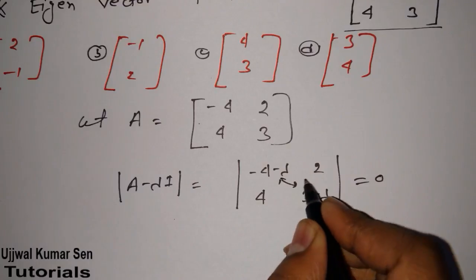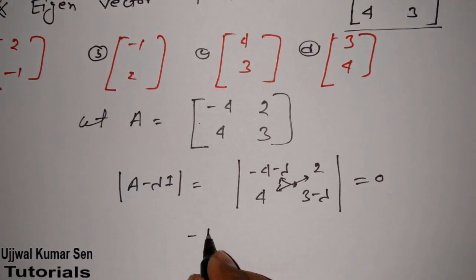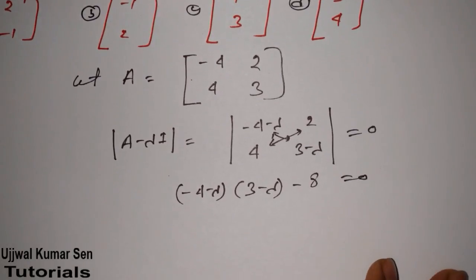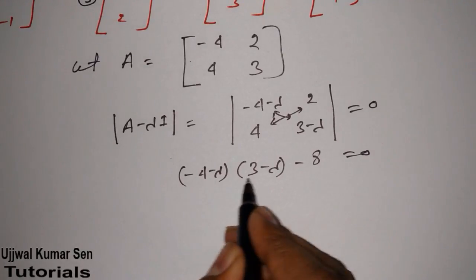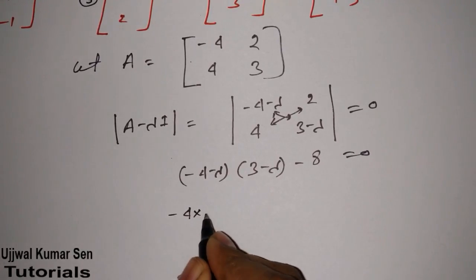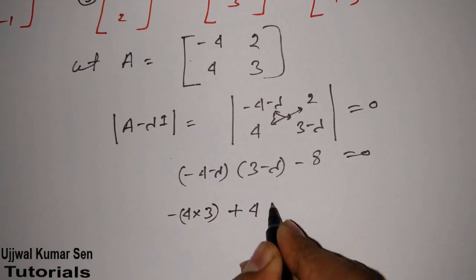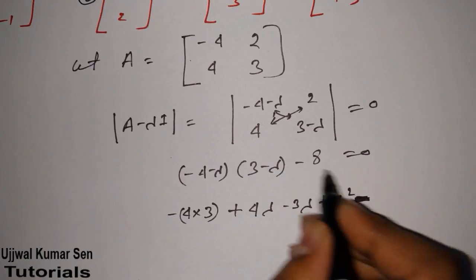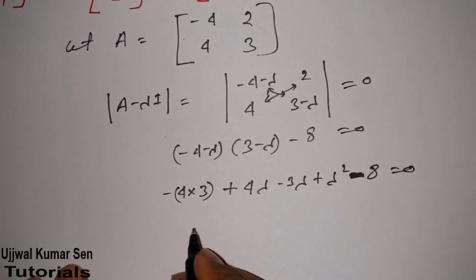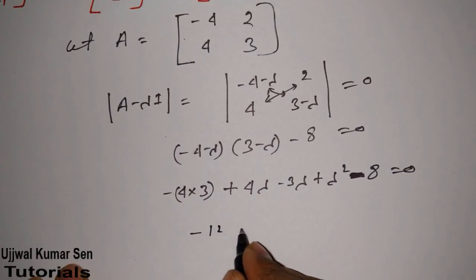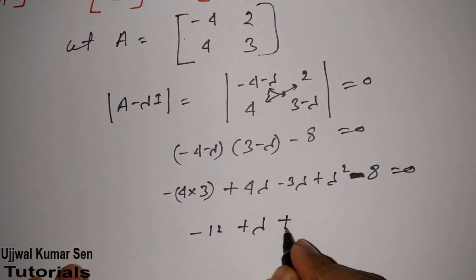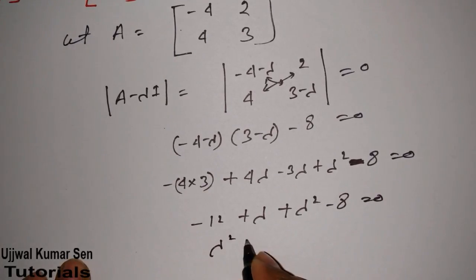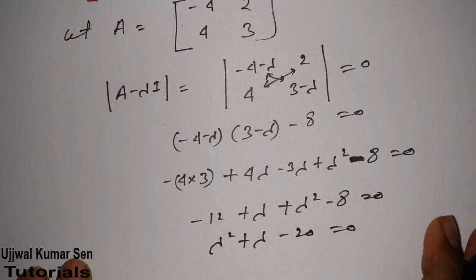Now I will do cross multiplication of these two first. So, (minus 4 minus lambda)(3 minus lambda) minus 8 equals 0. Expanding: minus 4 times 3, plus 4 lambda, minus 3 lambda, plus lambda squared, minus 8 equals 0. Therefore, minus 12 plus lambda plus lambda squared minus 8 equals 0.